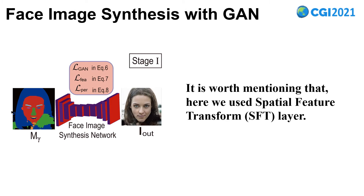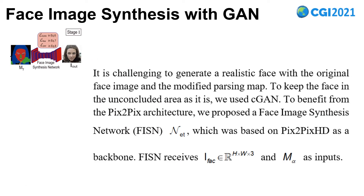In the section of face image synthesis, we designed an encode-decode network to produce the final 2D face. Notably, we use the SFT layer. It is challenging to generate a realistic face with the original face image and the modified pressing map. To keep the face in the unoccluded region as it is, we use CGAN. To benefit from the Pix2Pix architecture, we propose a face image synthesis network, FRSN, which is based on Pix2Pix HD as a backbone.